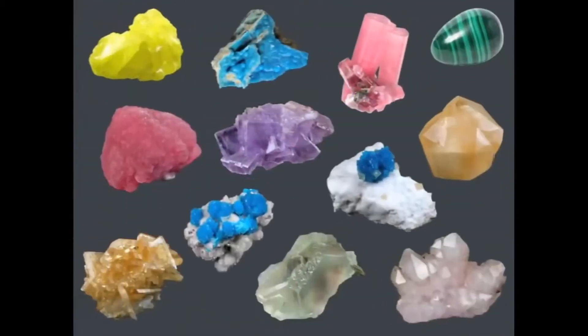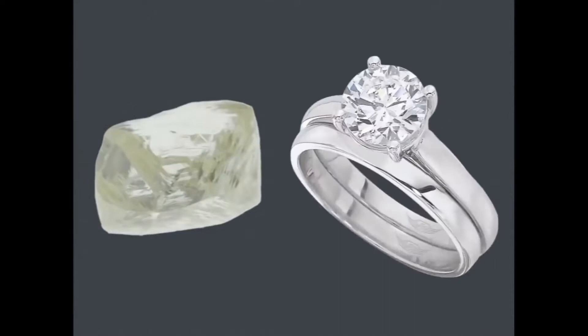On Earth there are over 2,000 varieties of minerals, coming in a wide variety of colors, shapes, sizes, and textures. Minerals have many uses in everyday life. For example, diamonds are used for jewelry, as tips of saw blades, and in a variety of industrial applications. Fluorite is most famous for its inclusion in toothpaste — fluoride in toothpaste is made from the mineral fluorite.